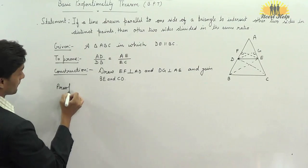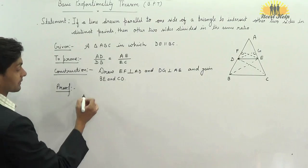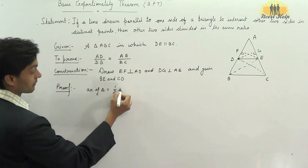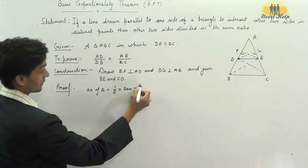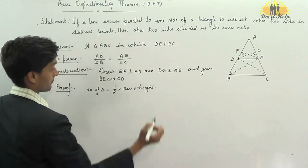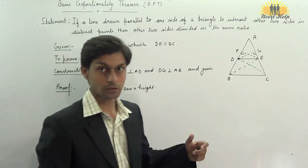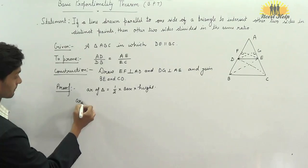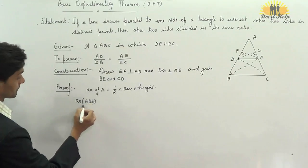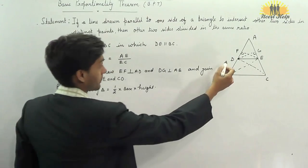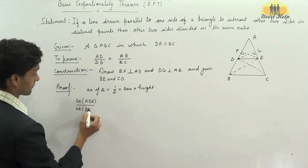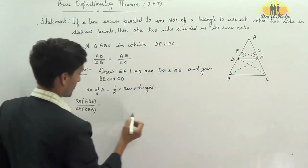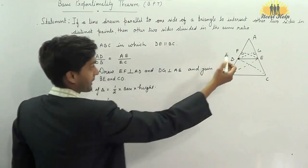Proof. First of all, write the formula of area of triangle. Area of triangle is half into base into height. We will use ratio of areas of two triangles. So, area of triangle ADE upon area of triangle DEB. Area of triangle ADE will be half into base AD.